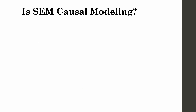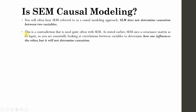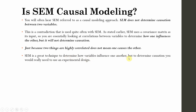Is SEM causal modeling? You will often hear SEM referred to as a causal modeling approach, but SEM does not determine causation between two variables. SEM uses a covariance matrix as its input, so you are essentially looking at relationships between variables to determine how one influences the other, but this will not determine causation. Just because two things are highly correlated does not mean that one causes another. To determine causation, you really need to do experimental design — change the cause and observe the changes in your outcome variable.